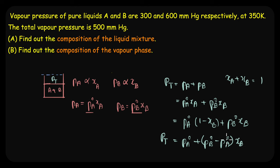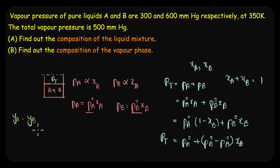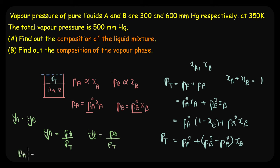This is a very powerful tool. Just as we can find the composition in the liquid phase through XA and XB, we can similarly find the composition in the vapor phase. Assuming YA and YB are the mole fractions of A and B in the vapor phase, YA = PA / P_total and YB = PB / P_total, directly from Dalton's Law of partial pressures.